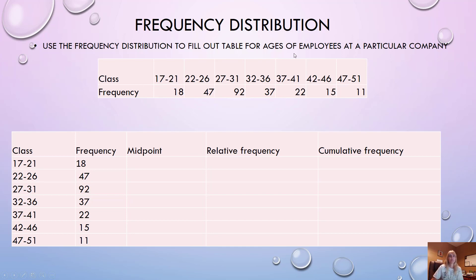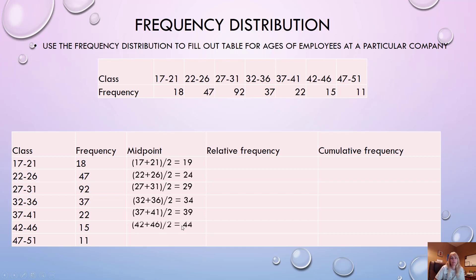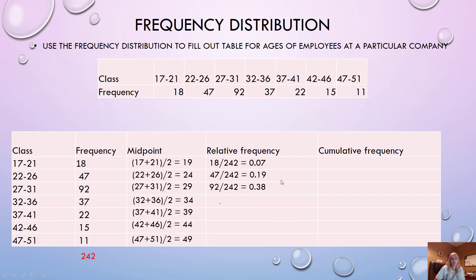You'll be given a frequency distribution showing ages of employees at a company along with the frequency. You'll be asked to find the midpoint, relative frequency, and cumulative frequency. The midpoint: take your class boundaries, add them together, divide by two — do that for every class. Relative frequency: take the frequency divided by the total frequency.